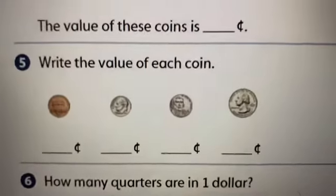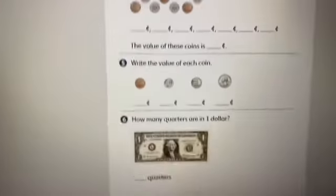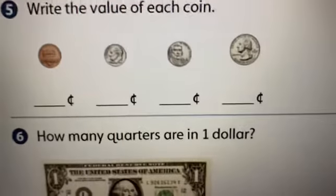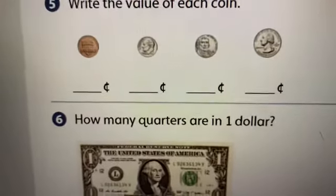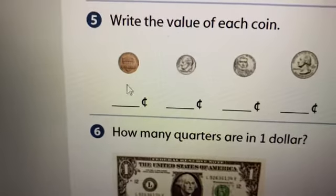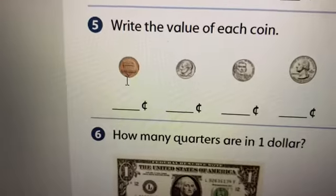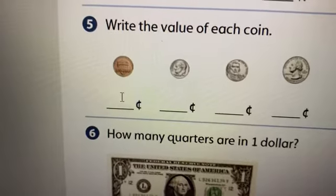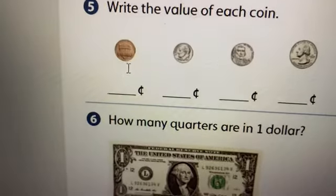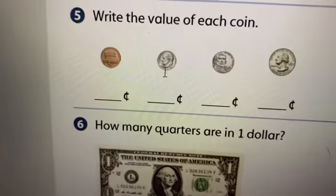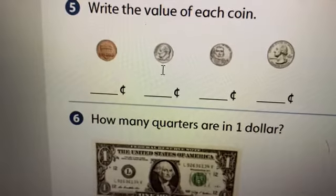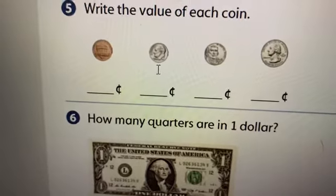Okay. Here are our coins. And I want you to tell me the name of this. It's a, right, a penny and it is worth, good, one cent. Tell me what is this? It's a dime, right? And a dime is worth, good, 10 cents.